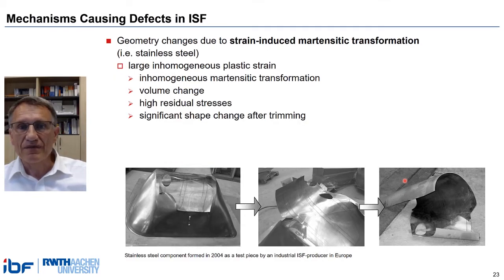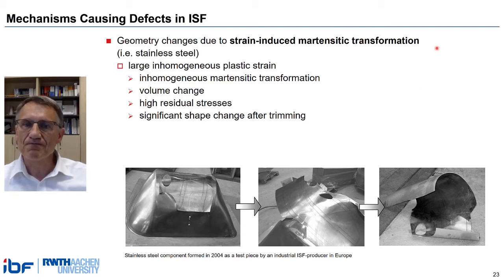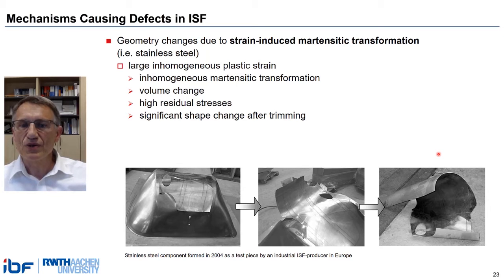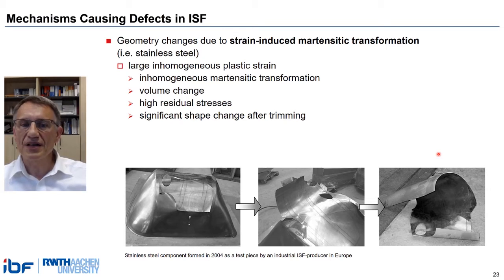Another well-known reason causing geometric deviation is strain-induced phase transformation. Especially in some stainless steels, this occurs at room temperature. In this example, it is a strain-induced martensitic transformation. This transformation leads to local density change, results in high residual stresses, and may end up in extreme distortions after trimming.